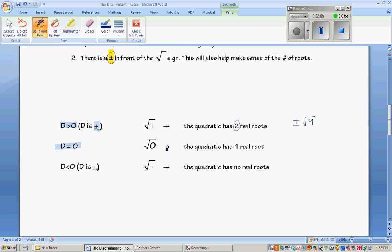When the discriminant is equal to zero, that means zero is underneath the square root sign, and the square root of zero is zero, so the quadratic has one real root. Think about it: if you have x equals negative b plus or minus zero, when you add or subtract the zero, it's going to be the same single answer.